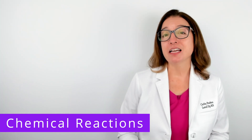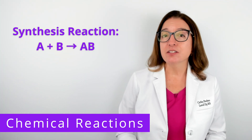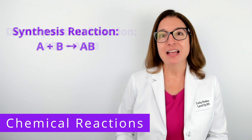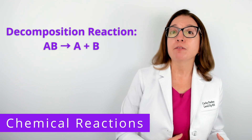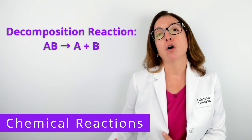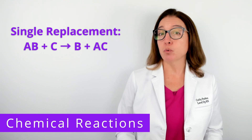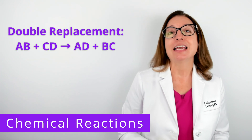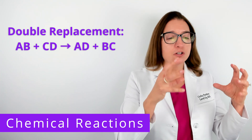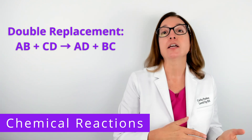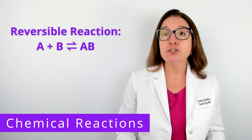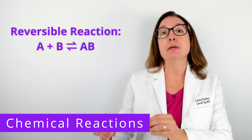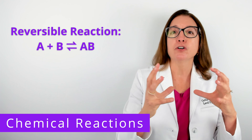Let's review the different types of chemical reactions. In a synthesis reaction, two or more substances are combined to form a more complex substance. In a decomposition reaction, a reactant is broken down into two or more products. In a single replacement reaction, one element replaces another in a compound. In a double replacement reaction, the two reactants exchange ions forming two new compounds. And in a reversible reaction, the conversion of reactants to products happens simultaneously as products are converted to reactants.